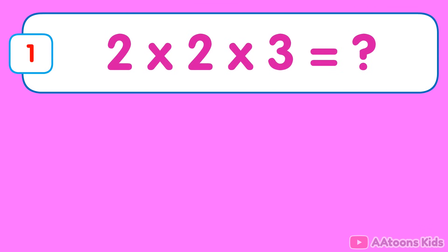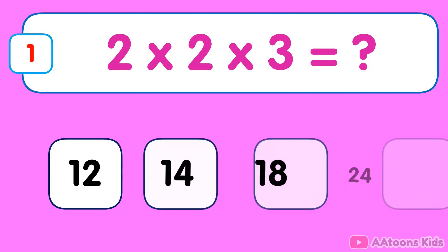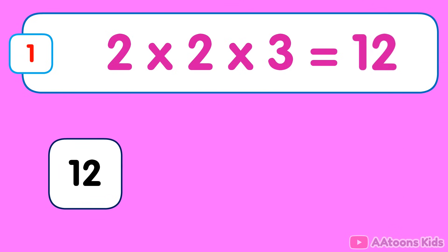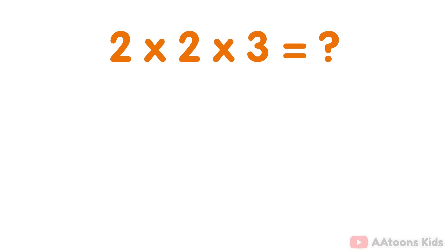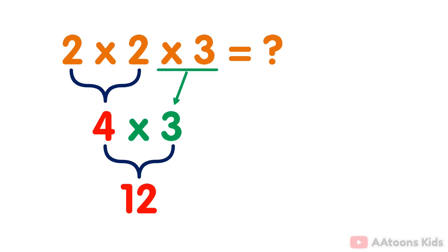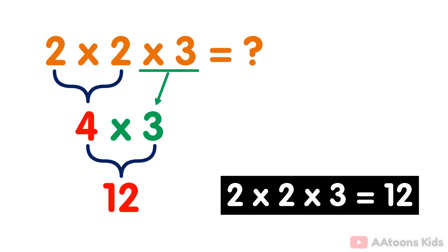2 multiplied by 2 multiplied by 3. The answer is 12. Simply multiply the numbers 2 and 2 which equals 4. Then you multiply the result 4 by 3. You will get 12. Therefore, the answer to 2 multiplied by 2 multiplied by 3 is 12.